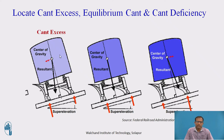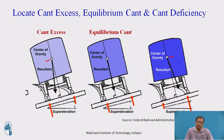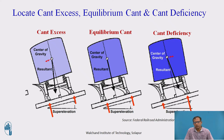In the first case it is cant excess, because the superelevation provided is high but the vehicle is going with very low speed — the resultant force shifts inward and the vehicle overturns on the inner side. The perfect condition is equilibrium cant, where the resultant force is normal and perpendicular to the plane of the rails and the load is balanced on both rails. In cant deficiency, the resultant force gradually shifts to the outer side, causing wear and tear between the outer wheel and the rail. Up to 75 mm the track can handle the higher speed, but beyond 75 mm the vehicle will overturn on the outer side.